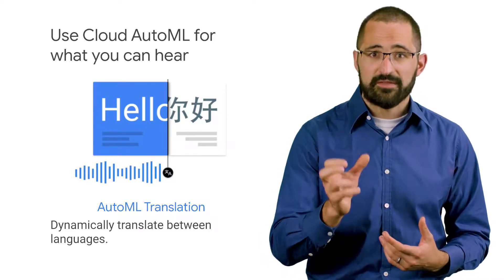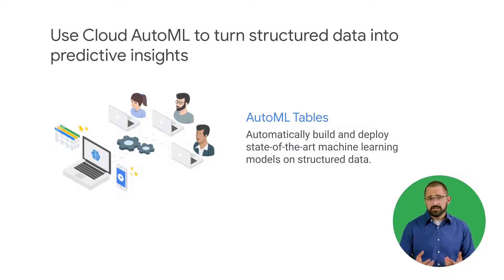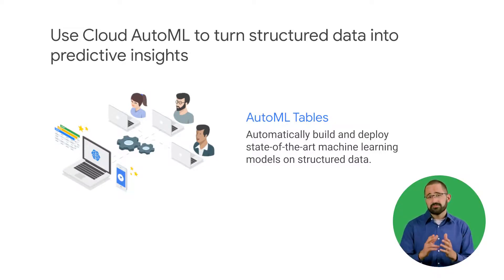AutoML Translation allows you to upload translated language pairs and then train a custom model where translation queries return specific results for your domain, which you can scale and adapt to meet your needs. AutoML Tables reduces the time it takes to go from raw data to top-quality, production-ready machine learning models from months to just a few days.